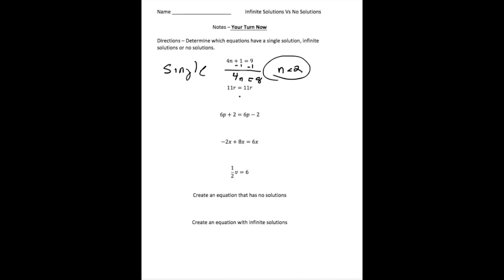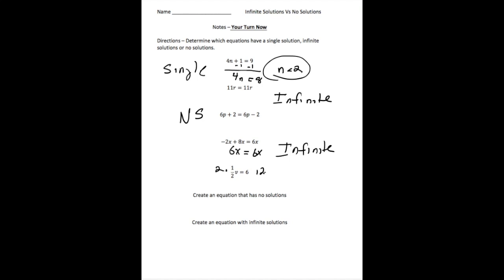Number 2: 11r equals 11r — this one is going to be infinite. Number 3: 6p plus 2 equals 6p minus 2. These expressions are not equal, so this is going to be no solution. Number 4: negative 2x plus 8x equals 6x. Simplifying, 6x equals 6x — this is going to be infinite. Number 5: one half v equals 6. If I multiply both sides by 2, I get v equals 12. So that's a single solution.